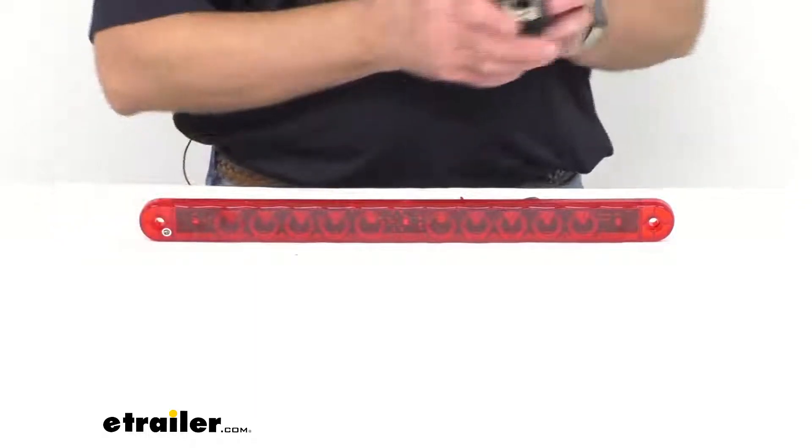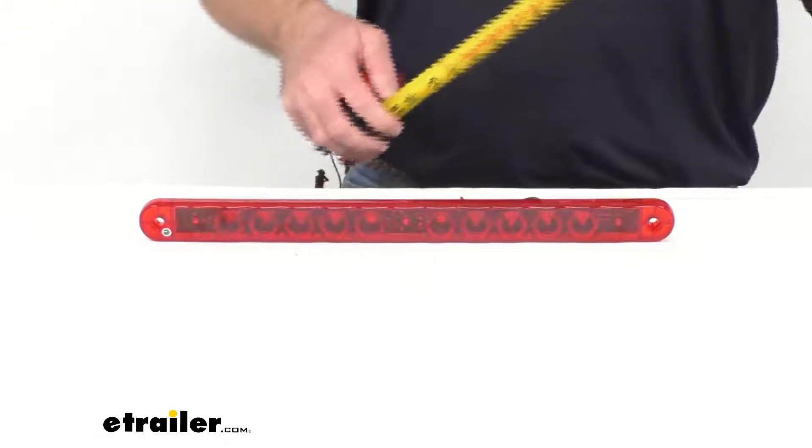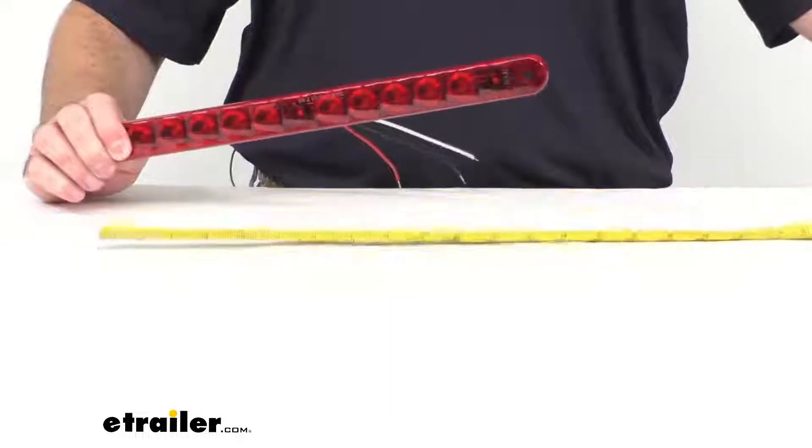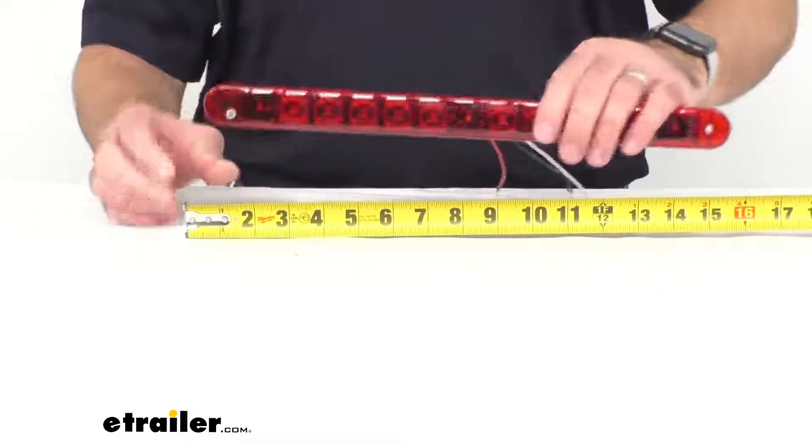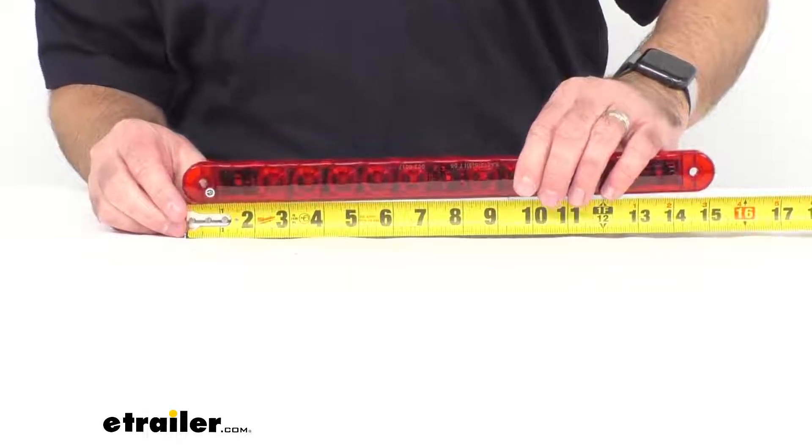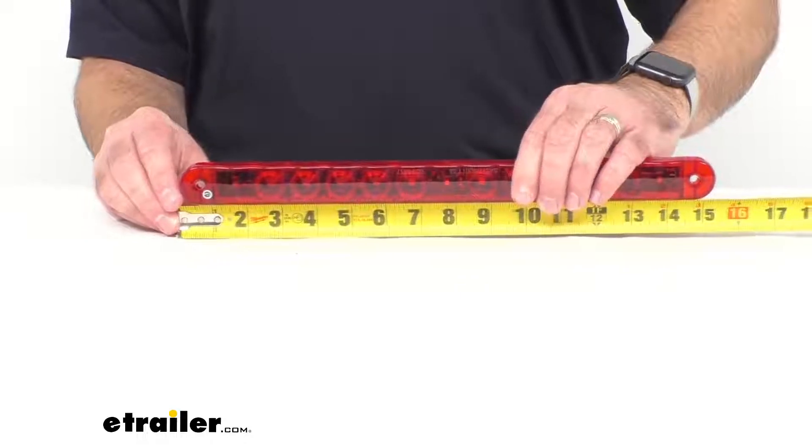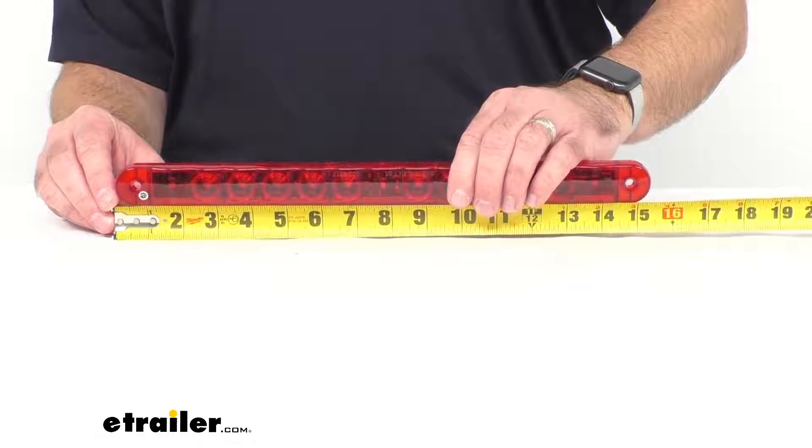This light is DOT and SAE compliant, and this does meet the FMVSS 108 requirements for automotive lighting. And the overall dimensions of this light is going to be sitting right at about 15 and a quarter inches long.